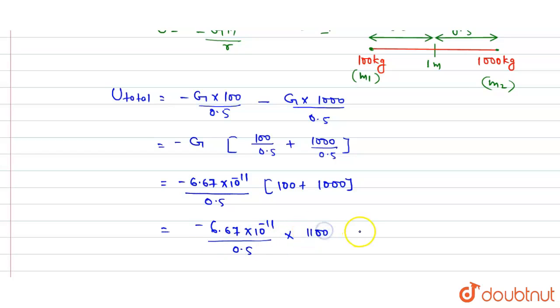On solving, we get this value equals -1.47 × 10^-7 joule. So this is the required answer, the total potential energy of the two bodies. I hope you understood, thank you.